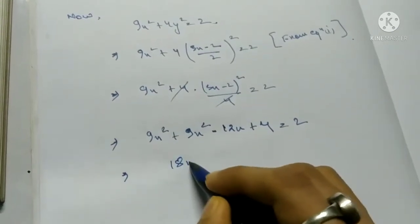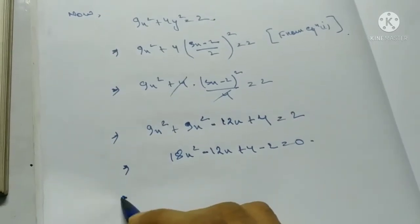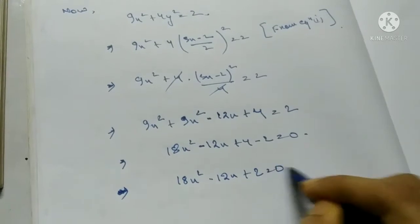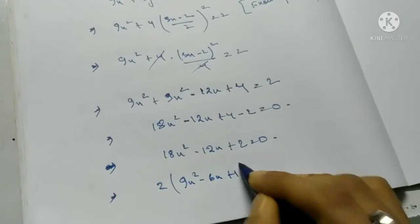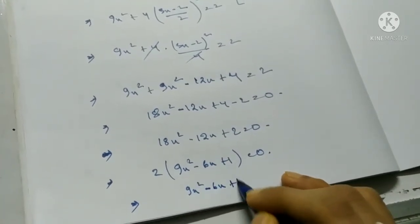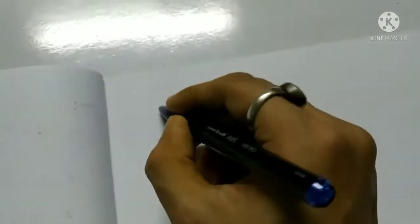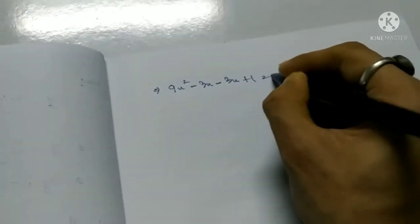Combining terms: 18x squared minus 12x plus 4 minus 2 equals 0, giving 18x squared minus 12x plus 2 equals 0. Taking 2 common: 9x squared minus 6x plus 1 equals 0. Using splitting the middle term: 9x squared minus 3x minus 3x plus 1 equals 0.